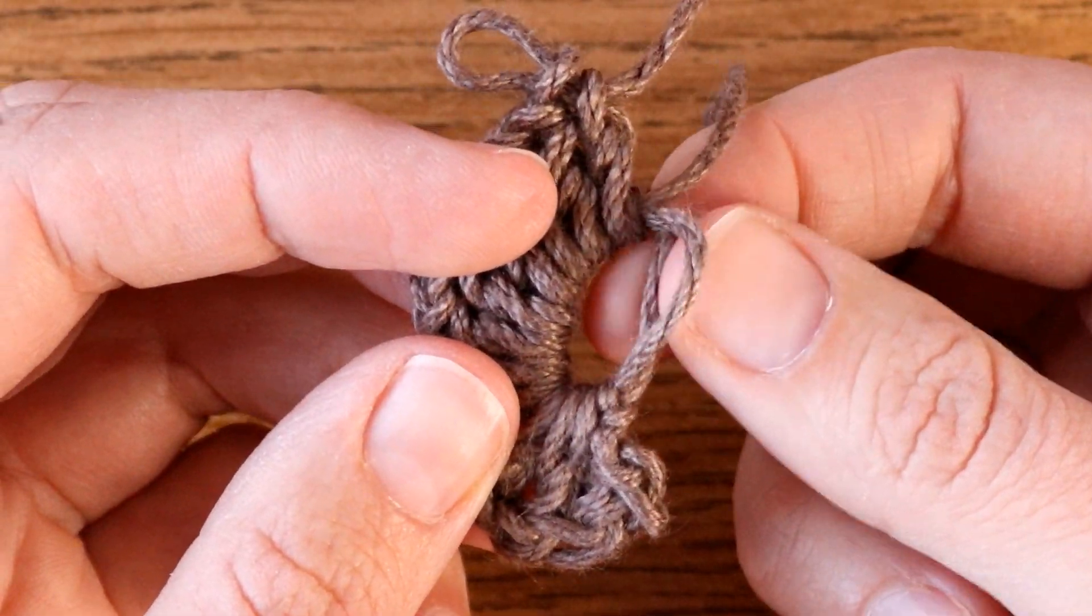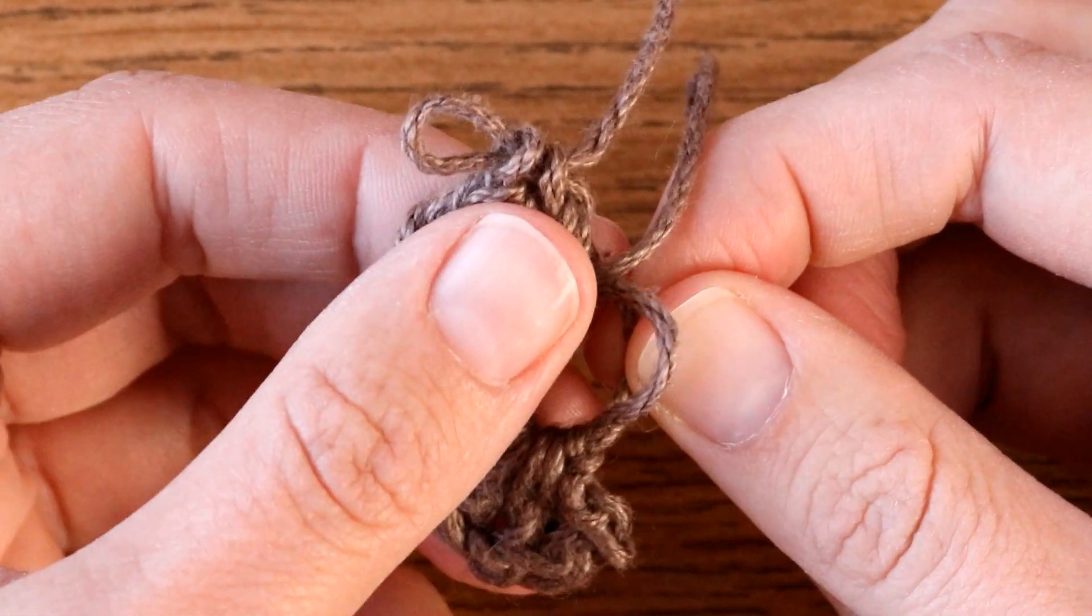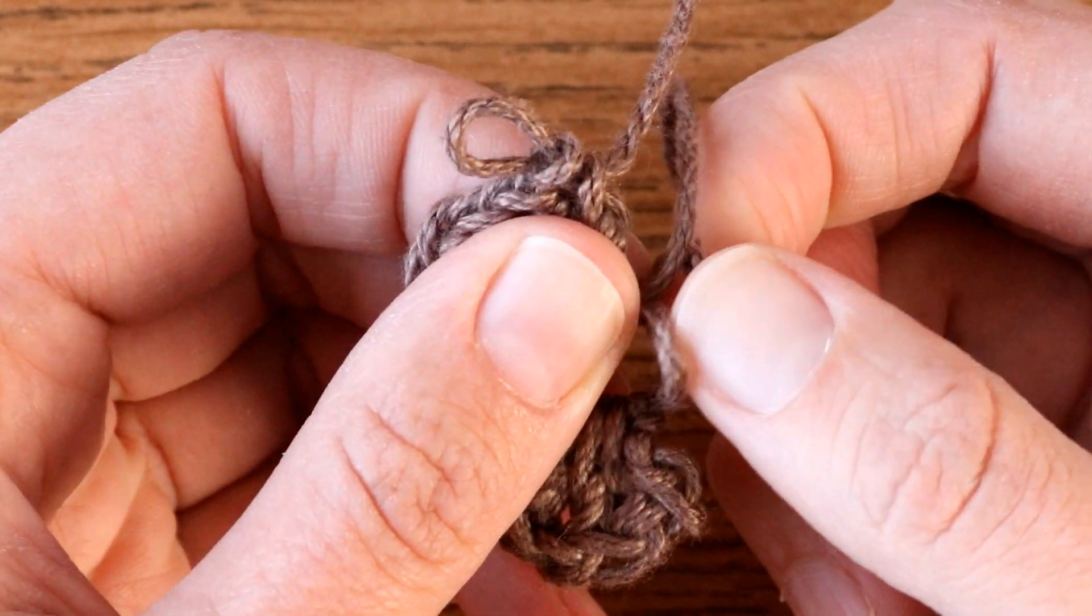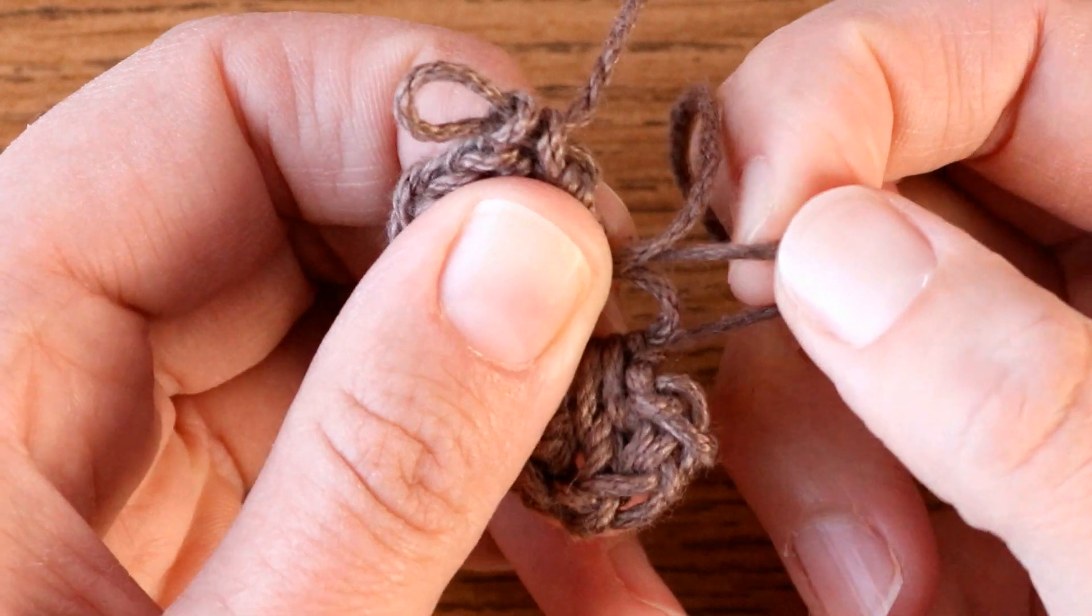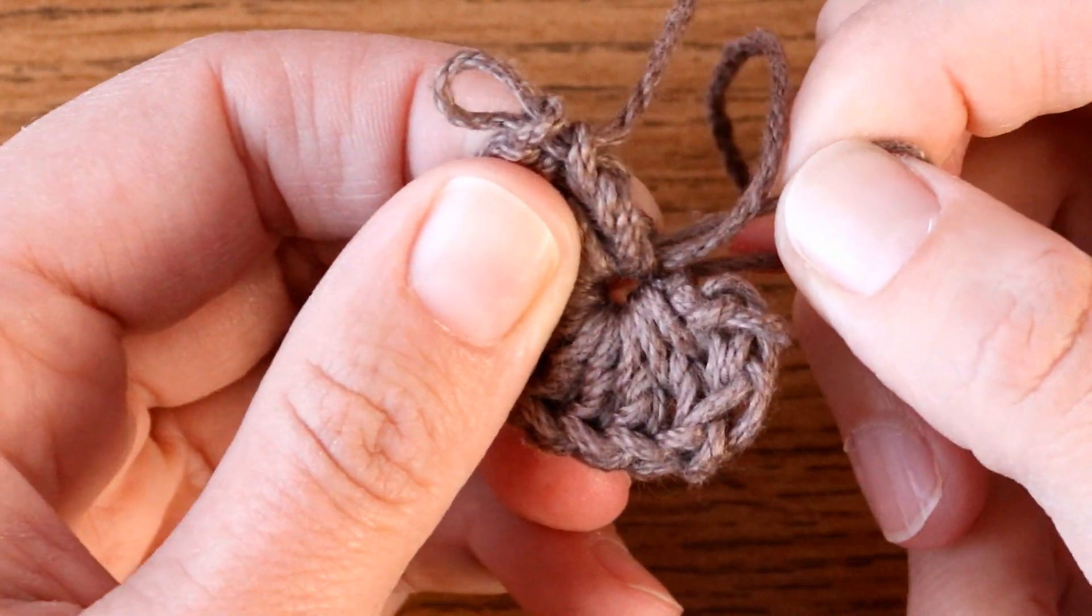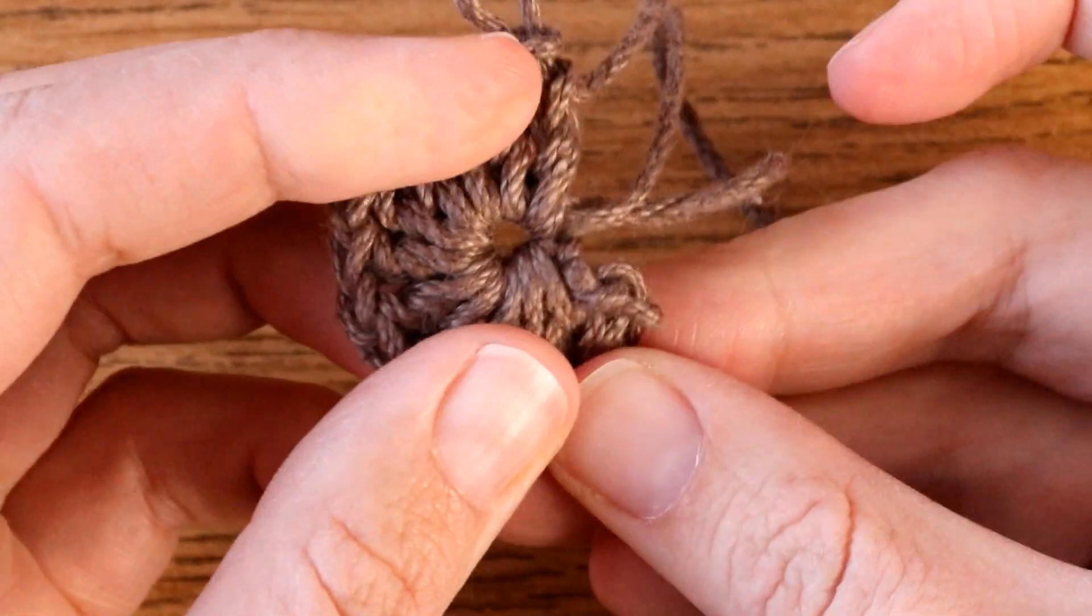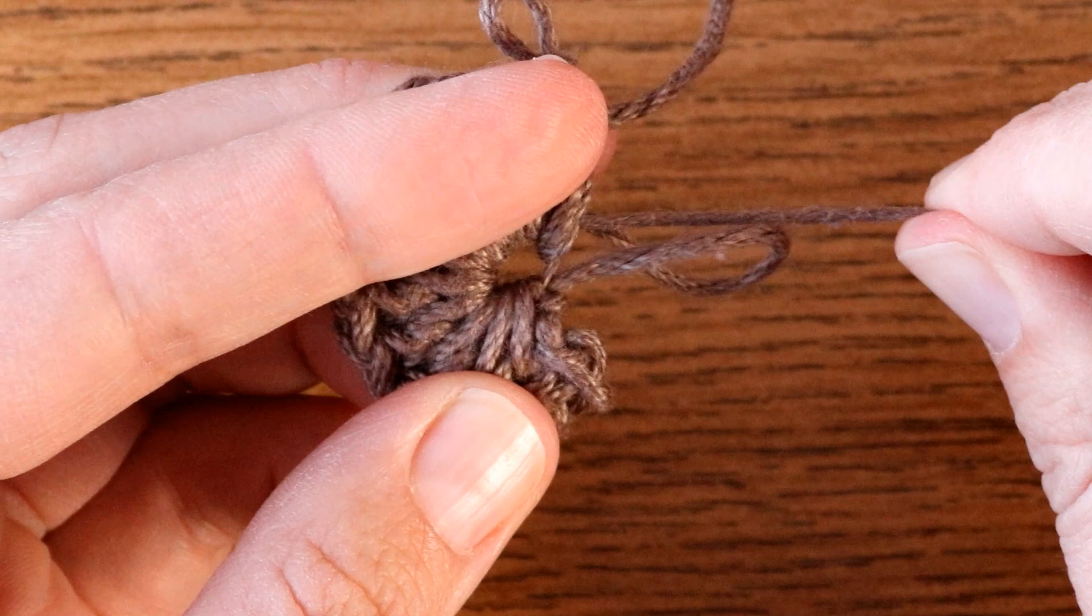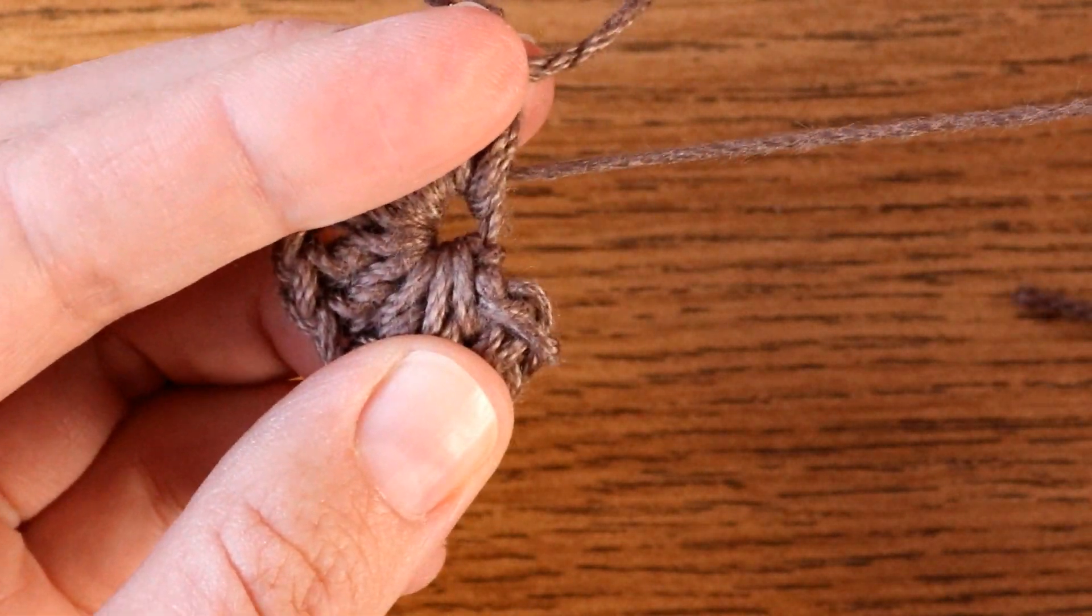What I can do is pull on this little cord that was getting shorter and I will see the other hoop start to vanish through. Then if I pull on the tail again the remaining cord will go, just like so.